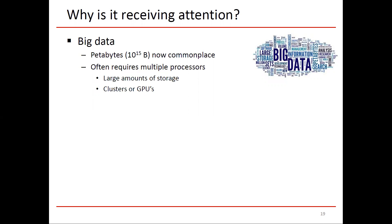One of the reasons is that the amounts of data being processed have now become very large. Petabytes — 10 to the 15 bytes — is now commonplace. And to process these large amounts of data, it often requires using multiple processors and sometimes even entire clusters. We need large amounts of storage and sometimes specialized hardware such as clusters or graphics processing units.